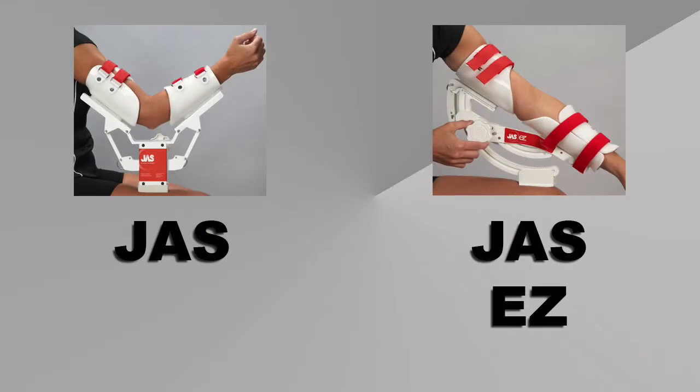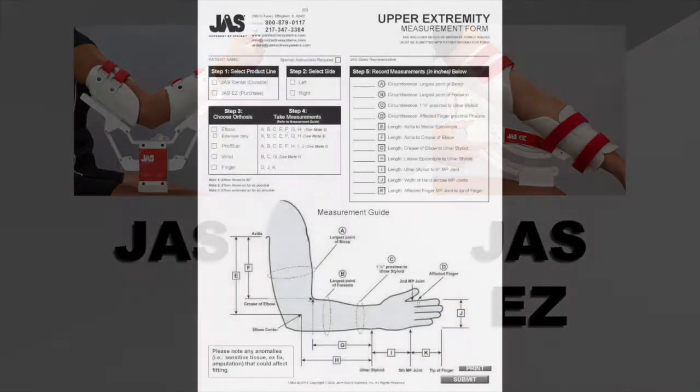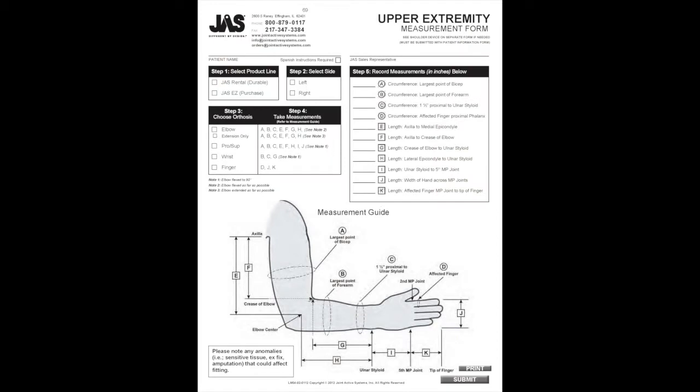The elbow measurements are located on the upper extremity measurement form. On this form, you will need to complete steps 1 through 3 before measuring for the orthosis.